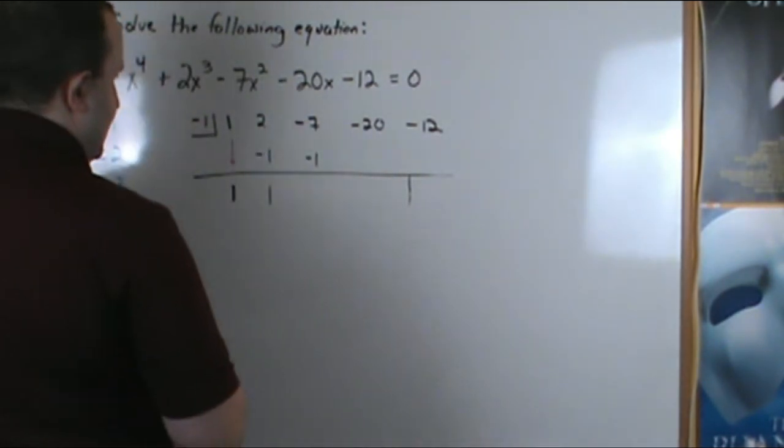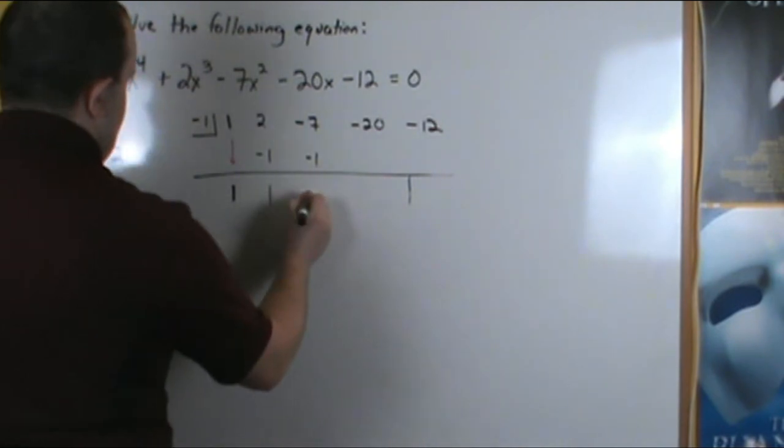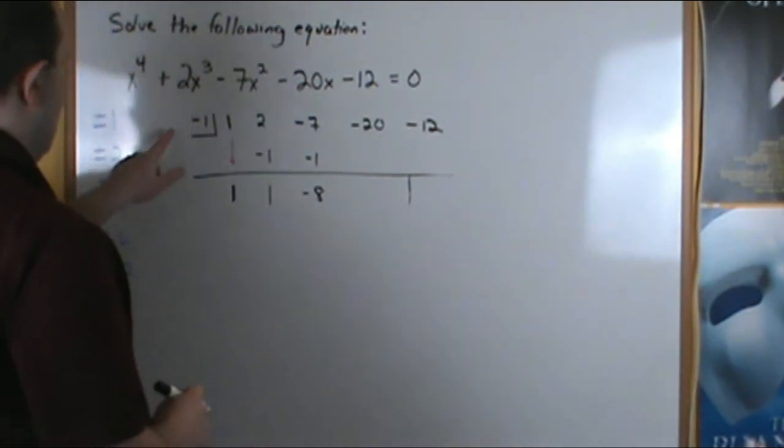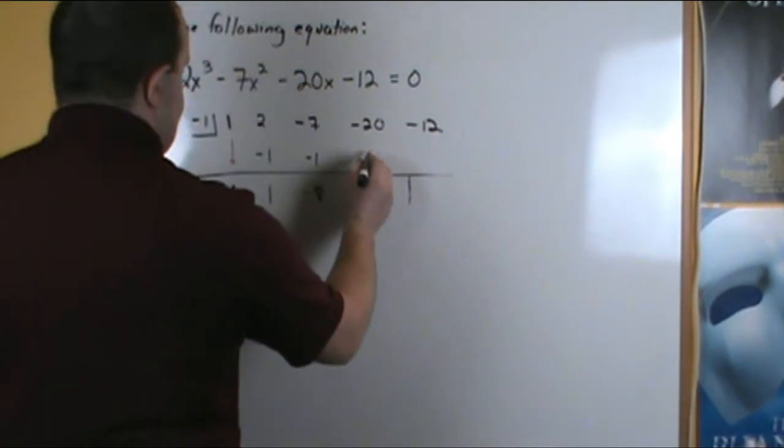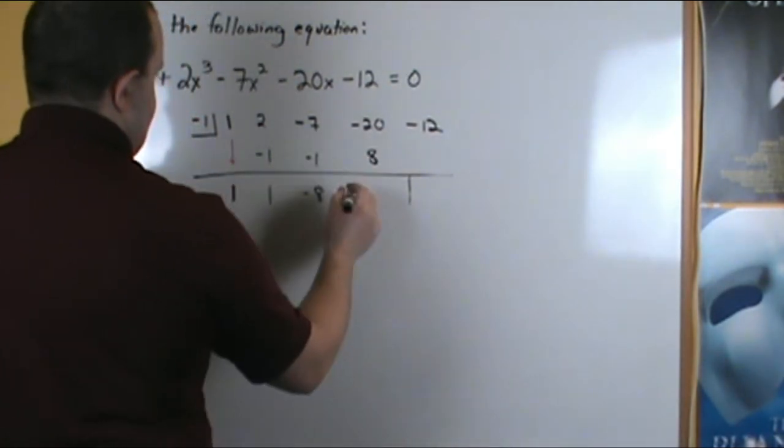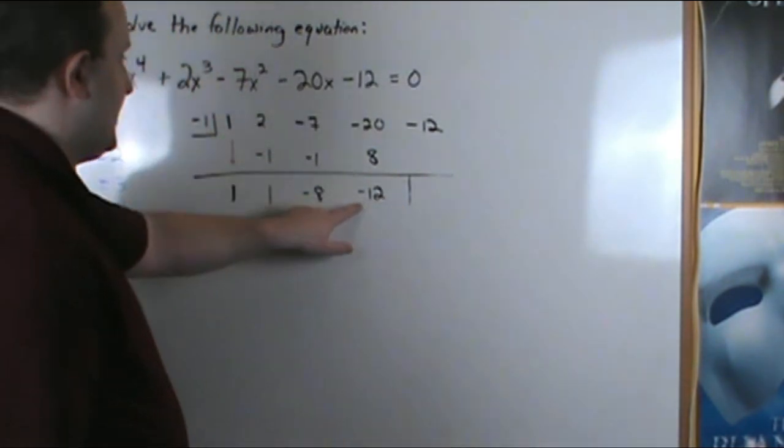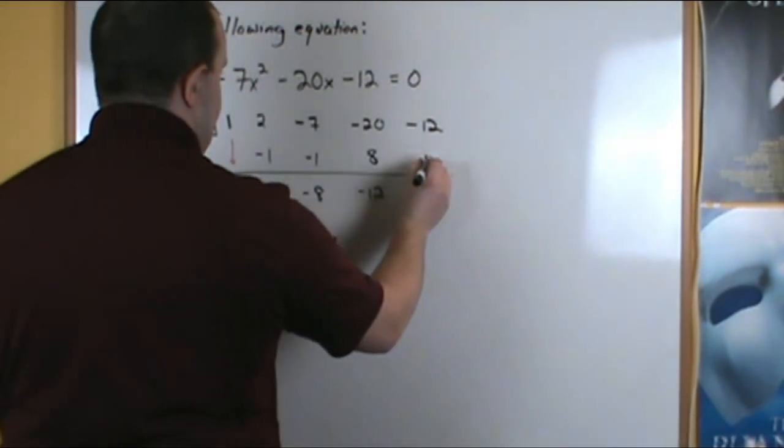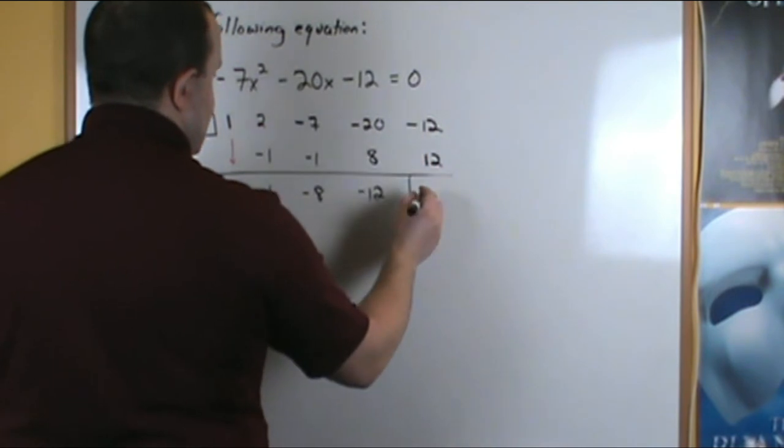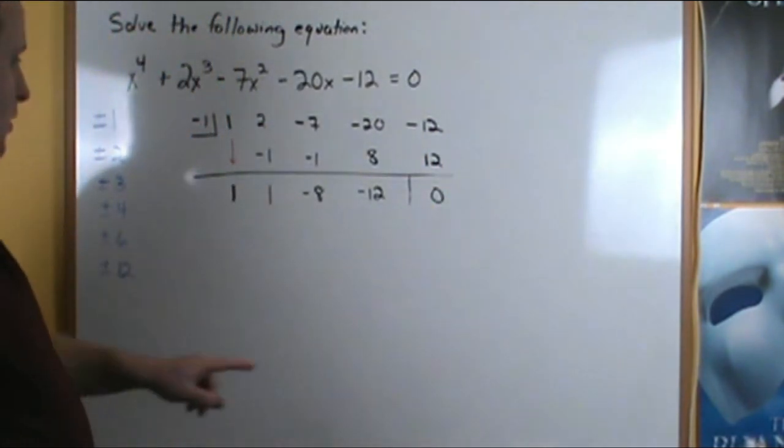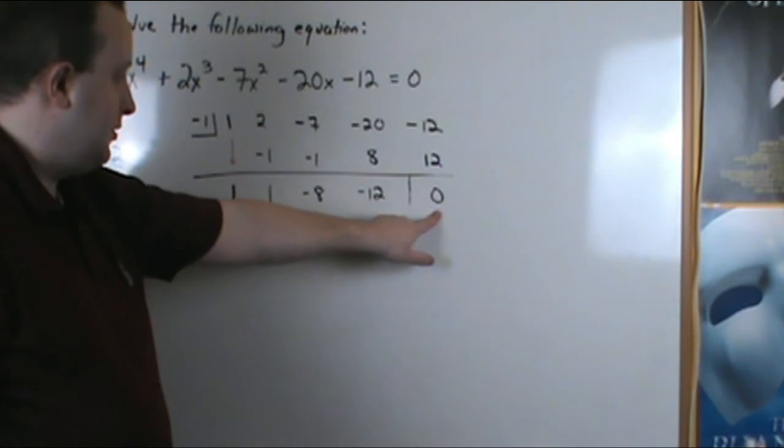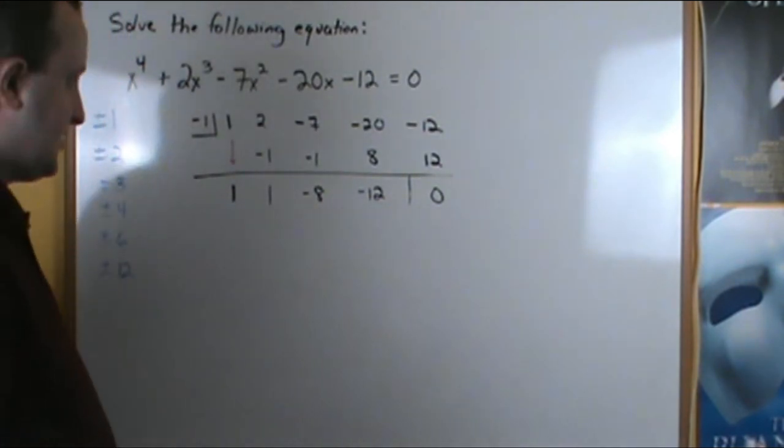Negative 7 plus negative 1 is negative 8. Negative 1 times negative 8 is a positive 8. Negative 20 plus 8 is a negative 12. Negative 1 times negative 12 is a positive 12. And negative 12 plus 12 is 0. We've got a remainder of 0, so x equals negative 1 is a solution.